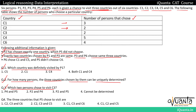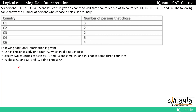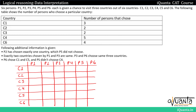We will draw a table with countries along the columns and persons along the rows. Whenever a person visits a particular country we will put a tick, and if not, a cross. The columns will be C1, C2, C3, C4, C5 and C6, and the rows will be P1, P2, P3, P4, P5 and P6.